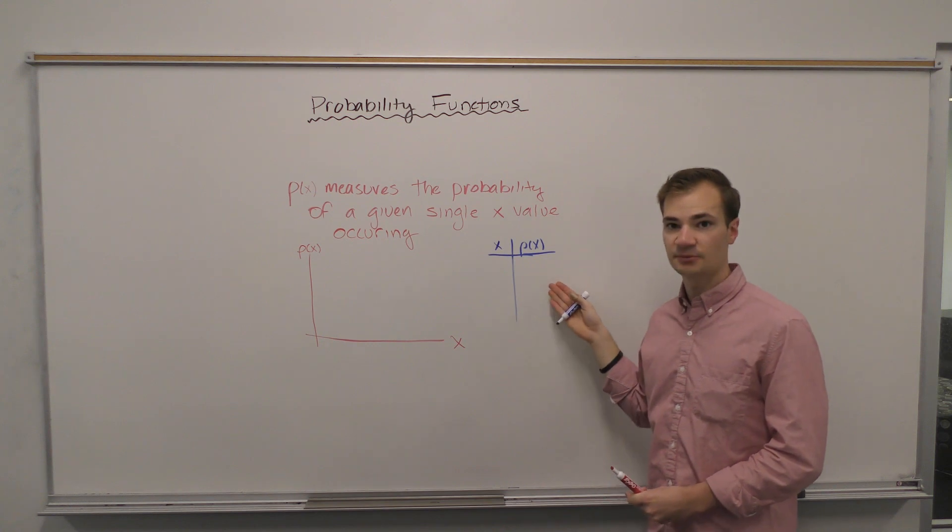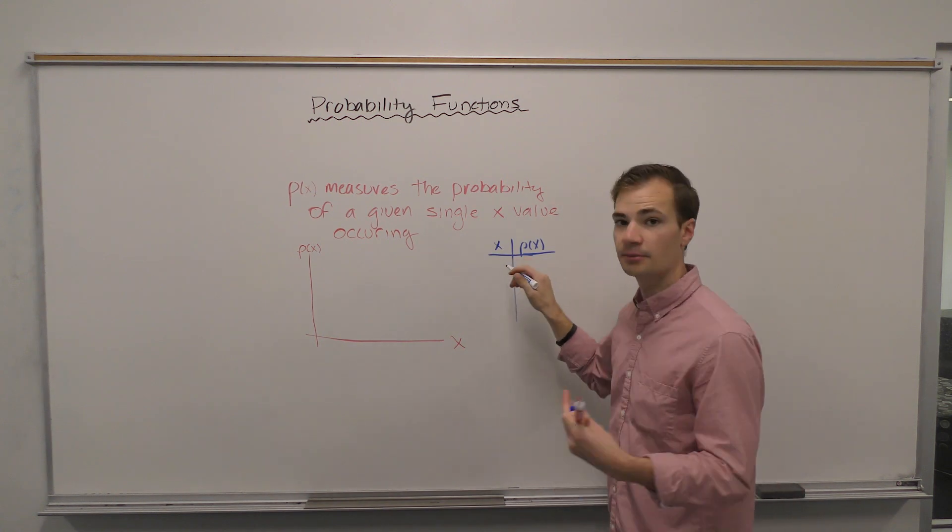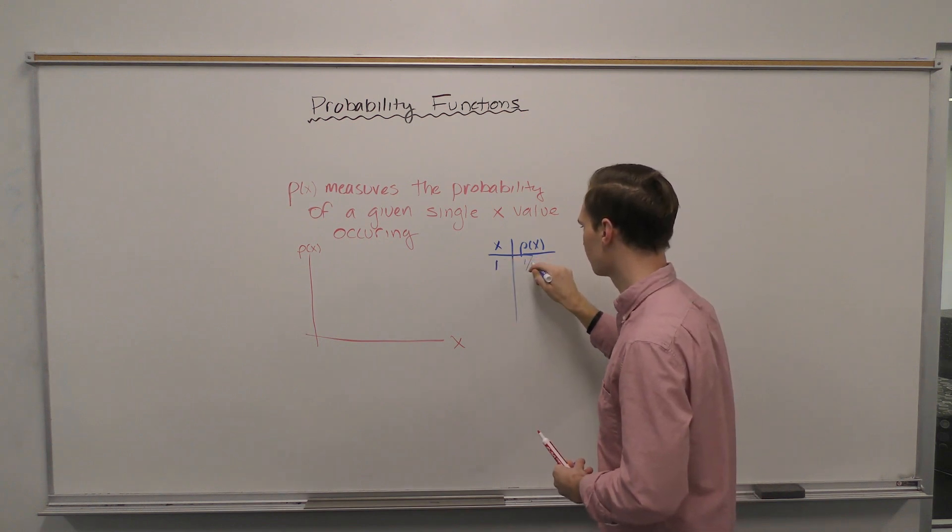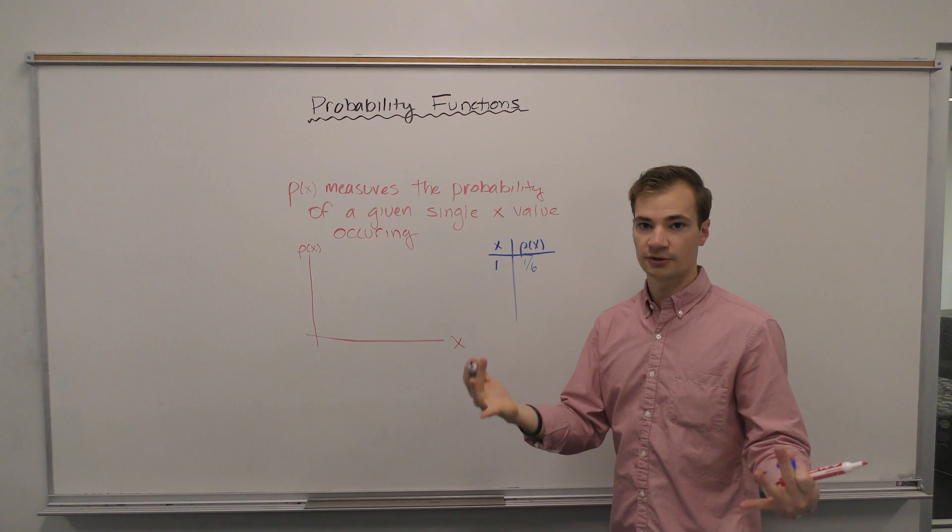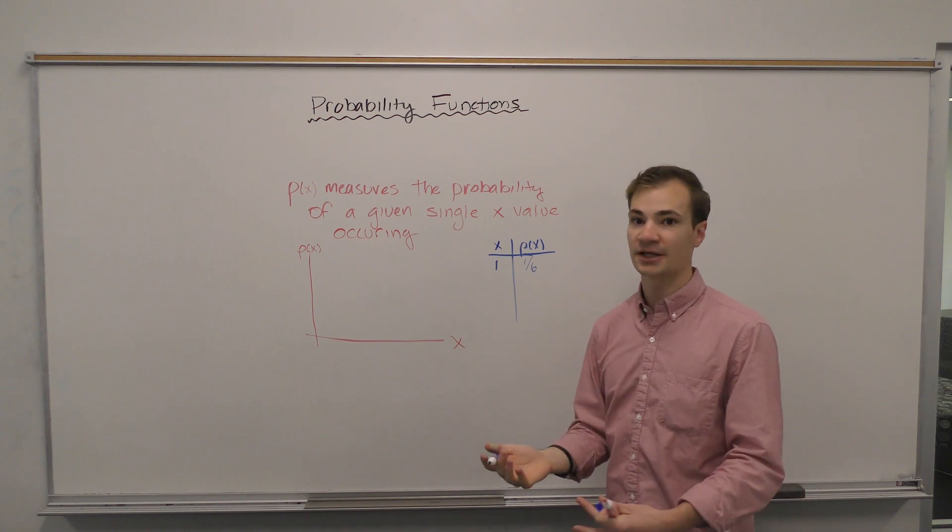We're going to set up the same type of tree that we use to graph a function. So the probability of rolling a one, the probability of rolling a two, a three, a four, five, and a six—they're all one-sixth. I have equal likelihood of happening.